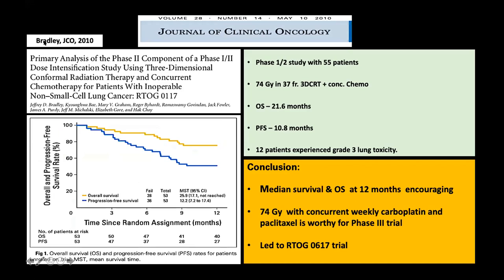Again by Bradley in 2010, another dose escalation study — a phase I/II trial — escalating to 74 Gy in 37 fractions with concurrent chemotherapy. At one year, overall survival and progression-free survival were encouraging. Median survival at 12 months was quite positive. Weekly carboplatin and paclitaxel were added alongside dose escalation, which led to the landmark trial RTOG 0617.